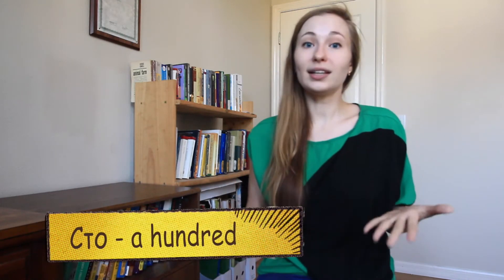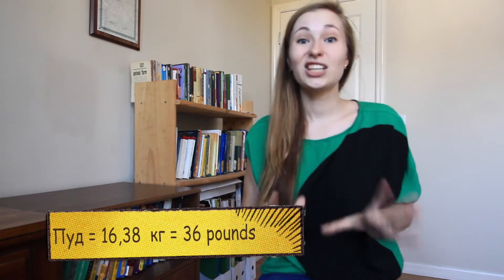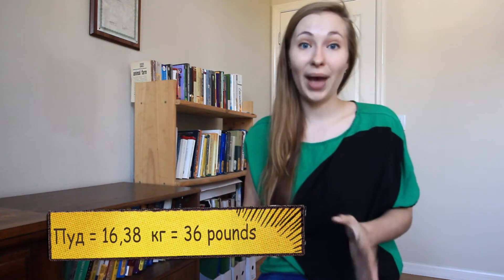Let's look at the literal meaning of this word. Well, 100 is 100, you know that, and Pud is an old Russian measurement of weight, or unit of weight. It is approximately 16.38 kilograms, so about 36 pounds.